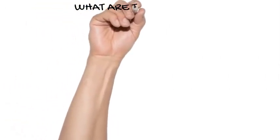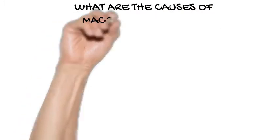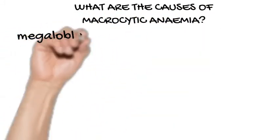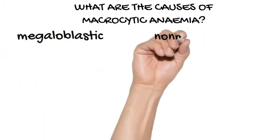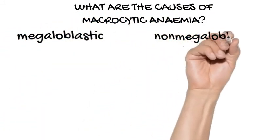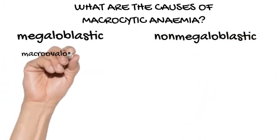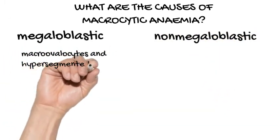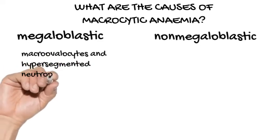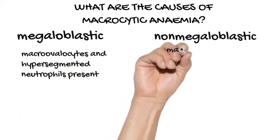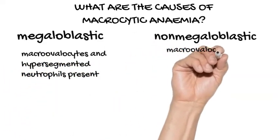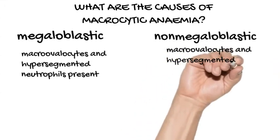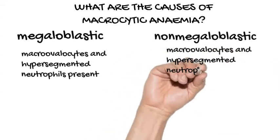What are the causes of macrocytic anemia? The causes of macrocytosis can be broadly classified as megaloblastic and non-megaloblastic. Megaloblastic processes are characterized on the peripheral smear by macro-ovalocytes and hypersegmented neutrophils, which are absent in non-megaloblastic macrocytic processes.